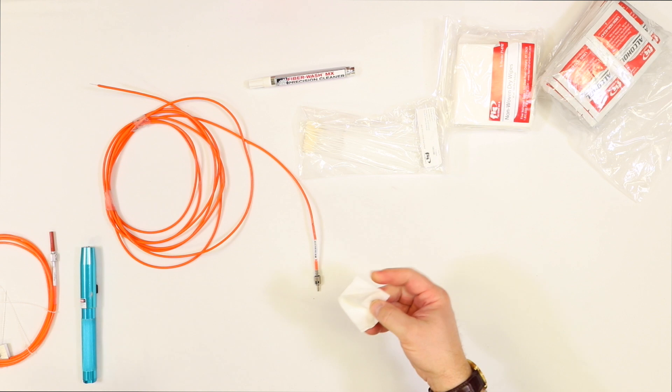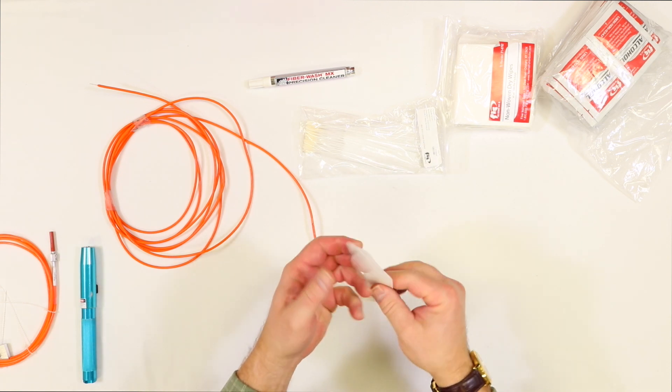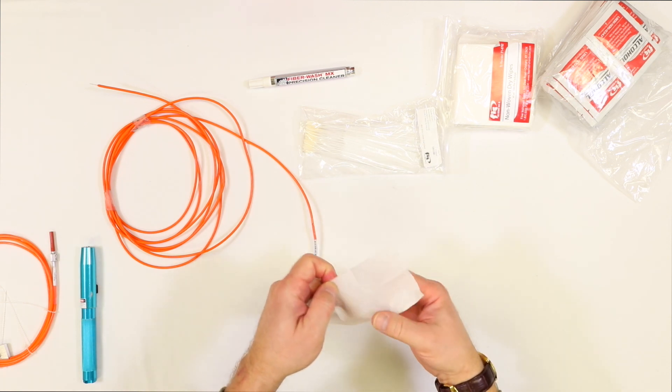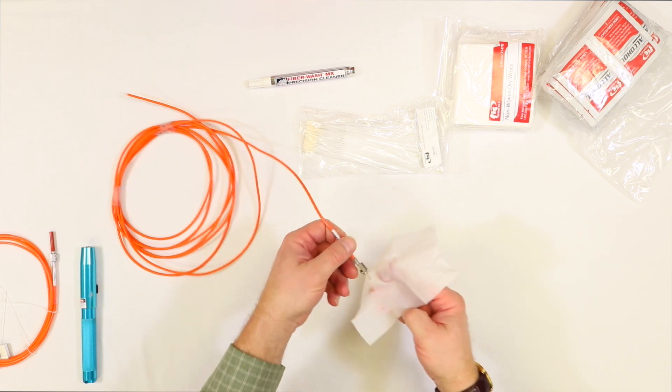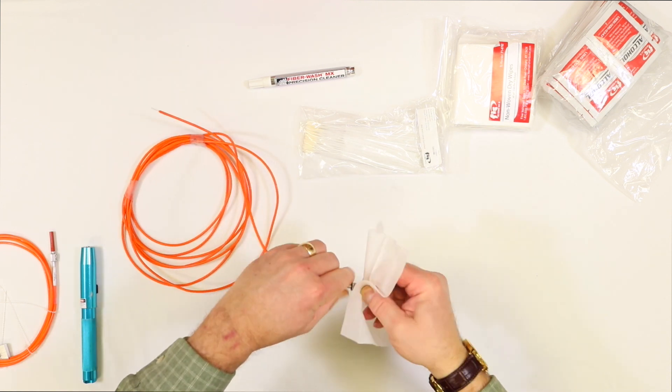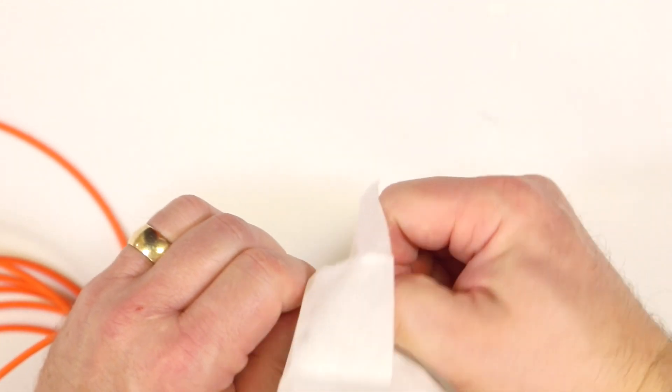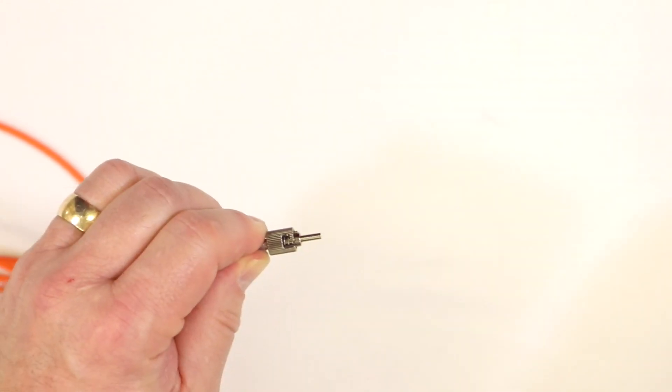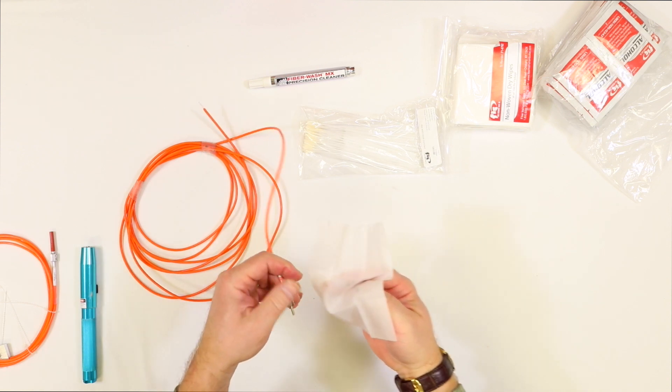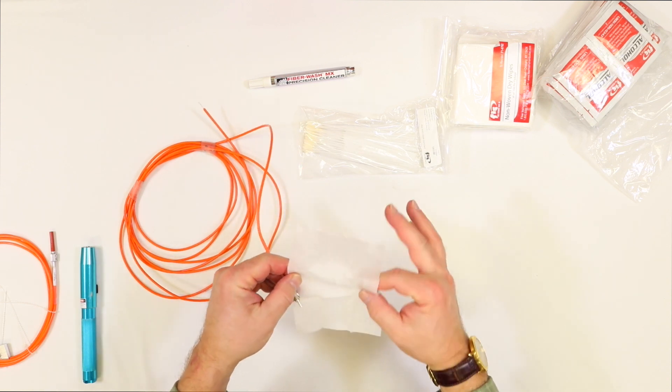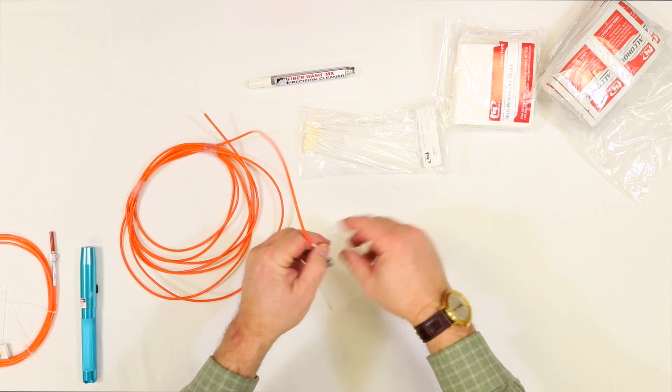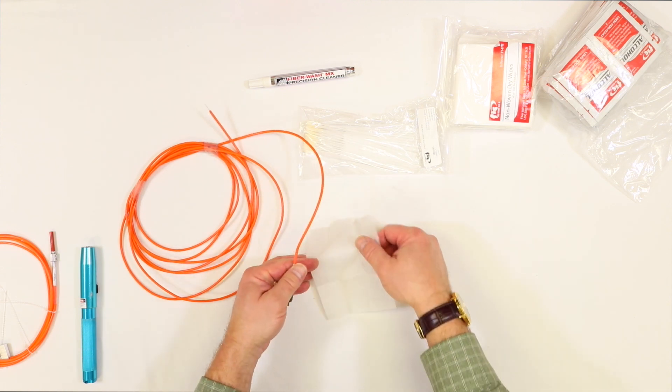There's a specific way to do that so you don't leave residue on the probe tip. Open up our wipe, wipe this around the ferrule one direction, and the last time we pull away from the point cleanly so that we take everything right off. You can see we've removed some junk from that.